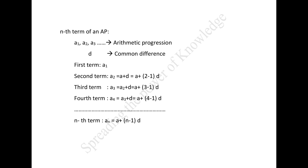Next, the nth term of an AP. Let a1, a2, a3 be an arithmetic progression whose first term a1 is a and the common difference is d. Then the second term a2 equals a plus d, which equals a plus (2 minus 1) times d. The third term a3 equals a2 plus d, equals a plus d plus d, which equals a plus (3 minus 1) times d. The fourth term a4 equals a3 plus d, which equals a plus (4 minus 1) times d, and so on.